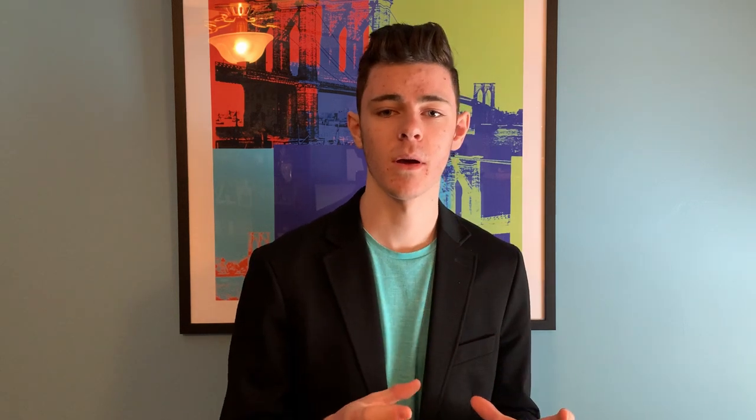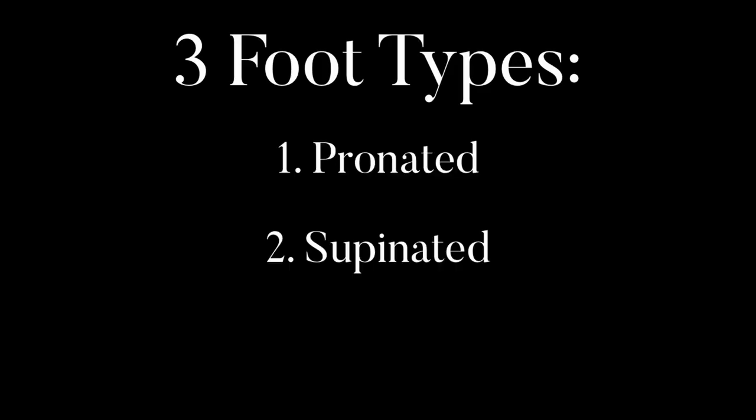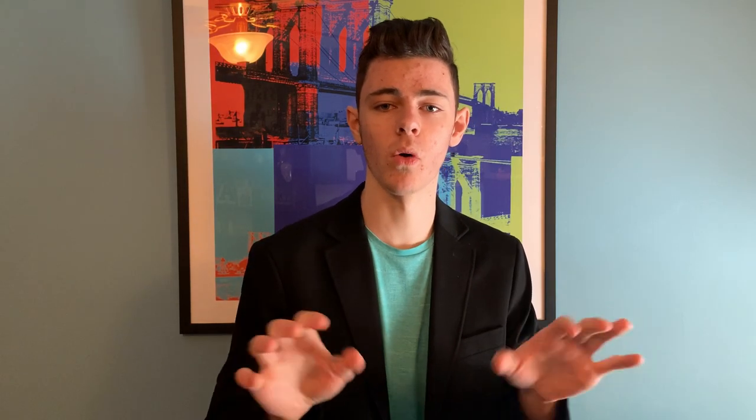To determine how or why someone would get plantar fasciitis, we must first look at their foot type. The three main foot types are pronated, supinated, and neutral. A pronated foot type is when the ankles roll in. This in turn forces the knees to go in, the hips to go out, messing with alignment. As that ankle rolls in, it forces the arch to collapse.